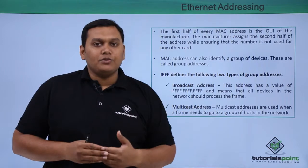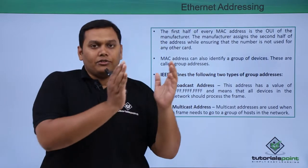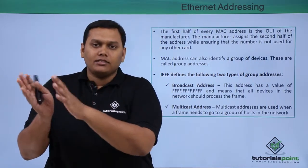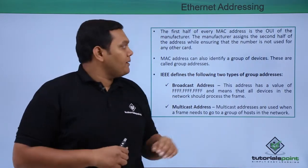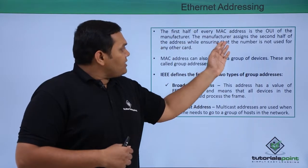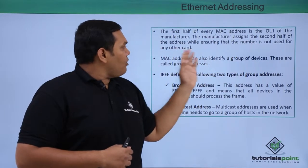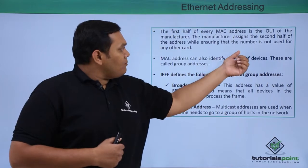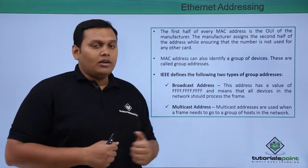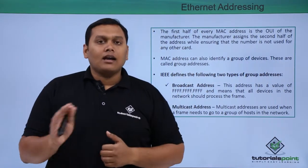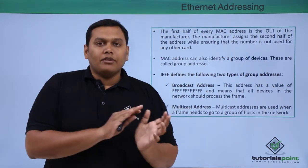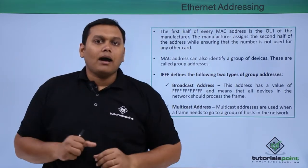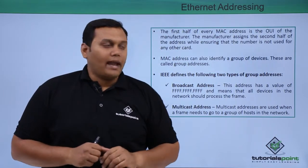For example, Juniper switches will be given a separate OUI for the Juniper vendor and Cisco vendor separately. The manufacturer assigns the second half of the address while ensuring that the number is not used on any other card.